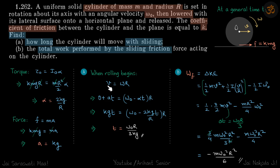Let's write v and omega both as a function of time because we need time. v will be 0 plus at, and omega will be omega naught minus alpha t. We put the values of a and alpha here and we'll get our answer.